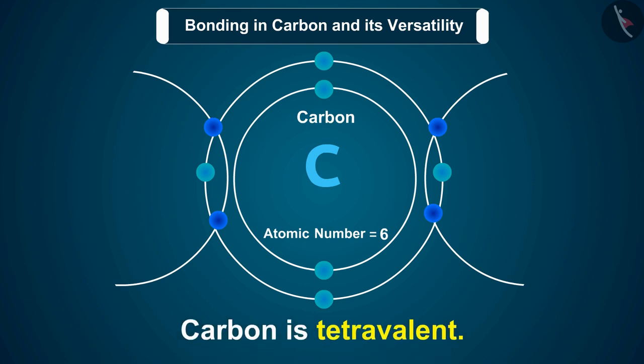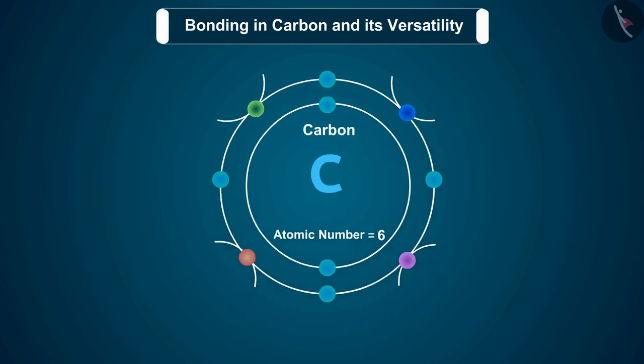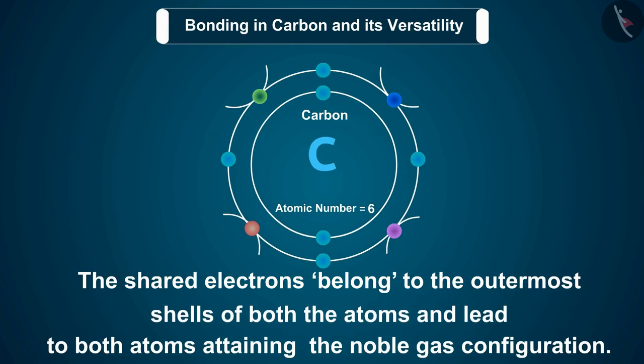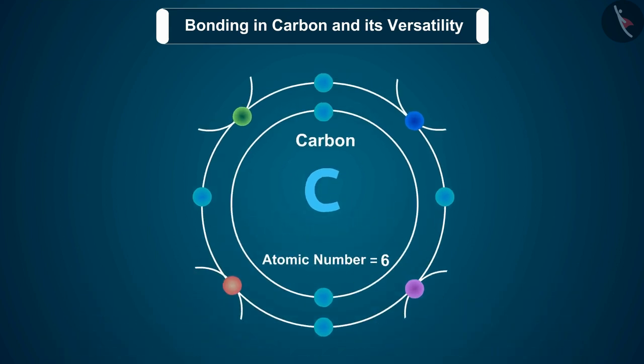Not just carbon, but many other elements form molecules by sharing electrons in this manner. The shared electrons belong to the outermost shells of both the atoms and lead to both atoms attaining the noble gas configuration. Before going on to compounds of carbon, let us look at some simple molecules formed by the sharing of valence electrons.